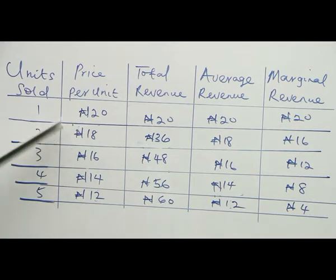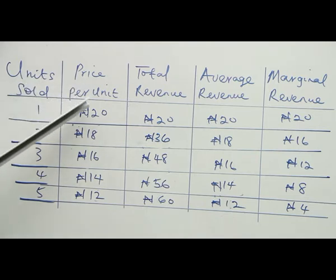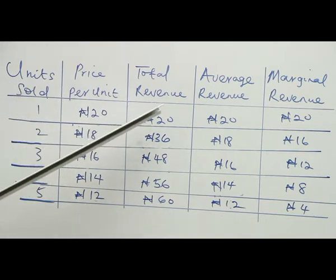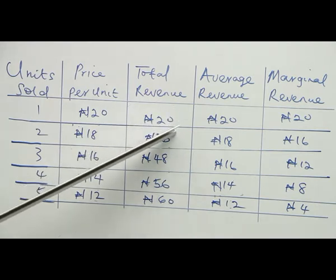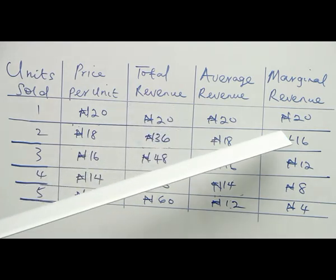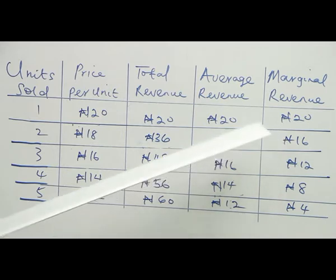Let's look at the table. Units sold, price per unit: when one unit is sold at 20 naira per unit, the total revenue is 20 naira, average revenue is 20, and marginal revenue is also 20.